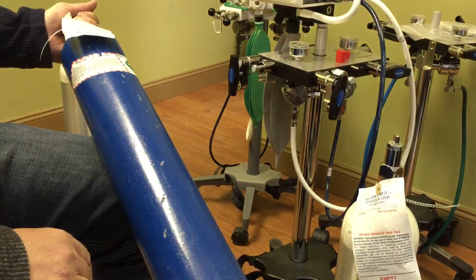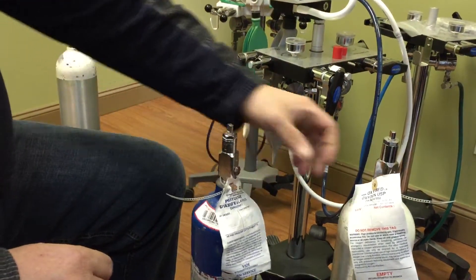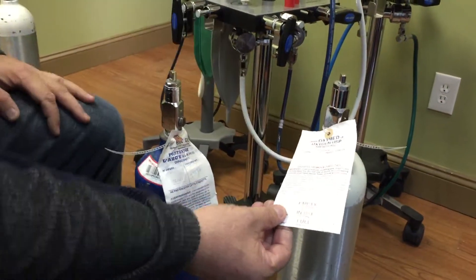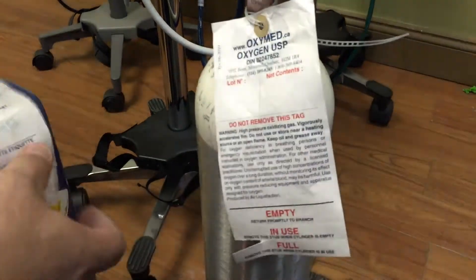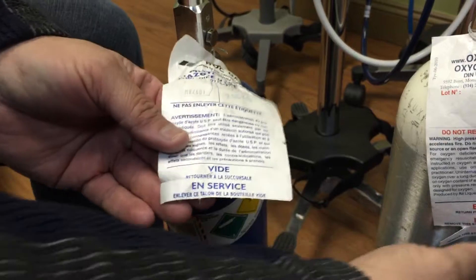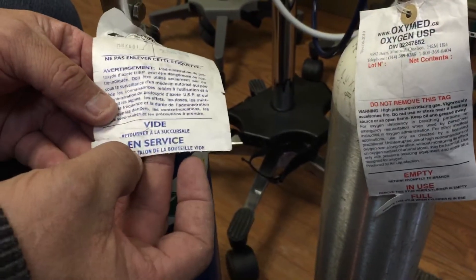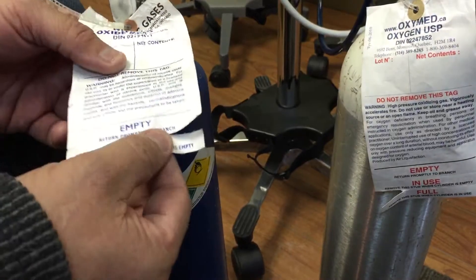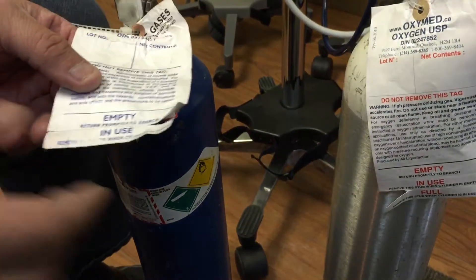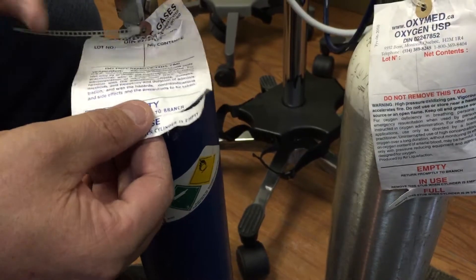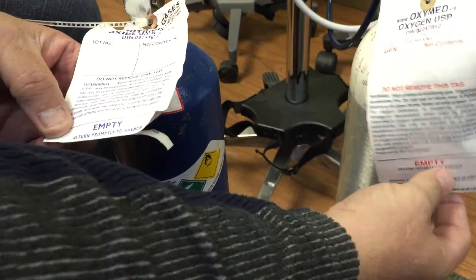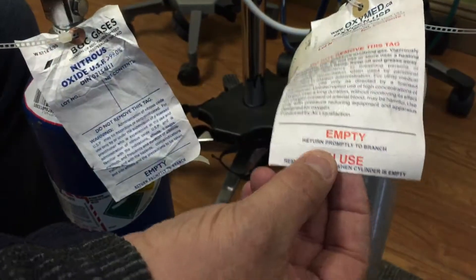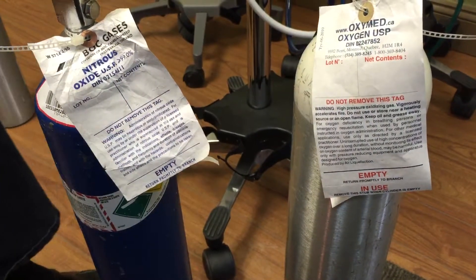Another thing that's very important is this tagging system. Once this tank depletes, we're going to tear off this one, and then the tank will be listed as empty, and that's when we go over to the next gas. Next one, and actually tear it off, and then this one will be in use. If this is forgotten, we're going to be sending full tanks back to the gas supply company.